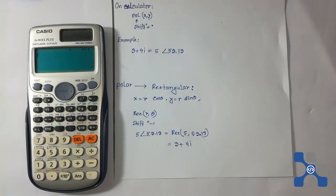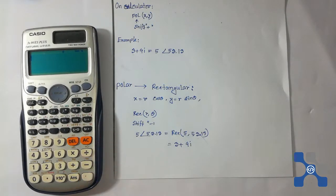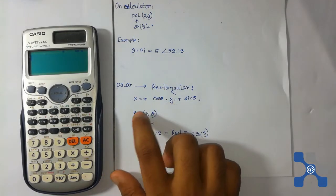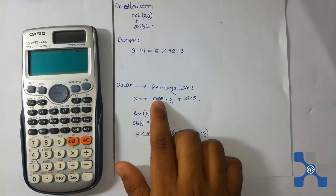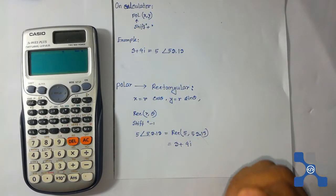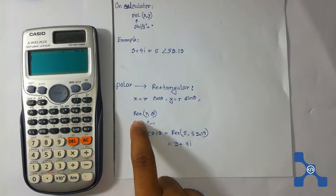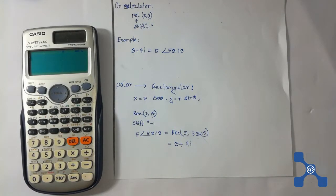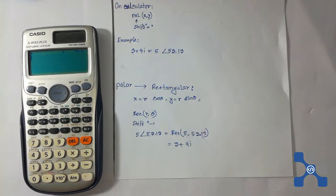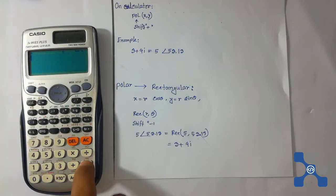Now I am going to show you how to convert polar form to rectangular form. We convert polar form to rectangular form using the formula: x equals r cos theta, y equals r sin theta. On this calculator we are going to use the REC function. Press shift button and then press the minus button — here we see REC.